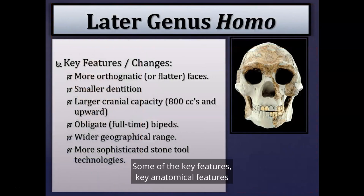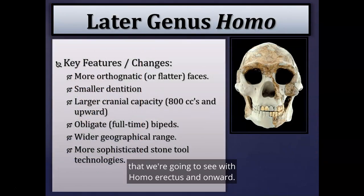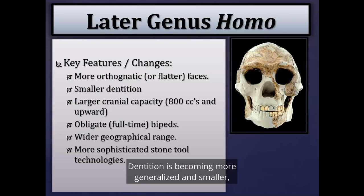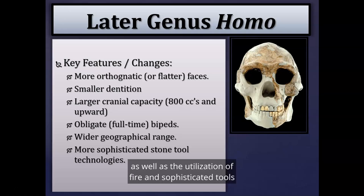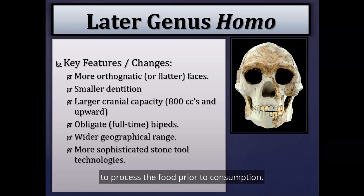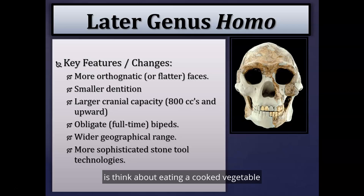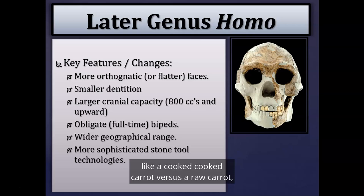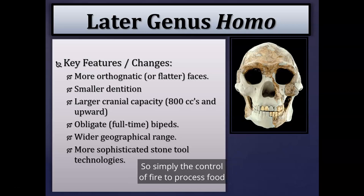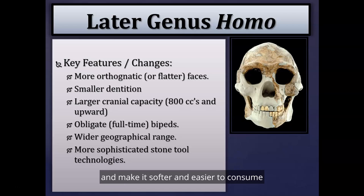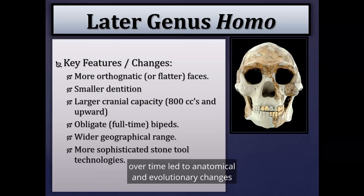Key anatomical features we see with Homo erectus and onward: we see more orthognathic or flatter faces, so less prognathism. Dentition is becoming more generalized and smaller, due mainly to a more generalized diet and the utilization of fire and sophisticated tools to process food prior to consumption. Think of eating a cooked carrot versus a raw carrot — it's much easier on the jaws. The control of fire to soften food led to evolutionary changes in dentition, jaw, and chewing muscles over time.